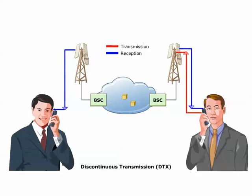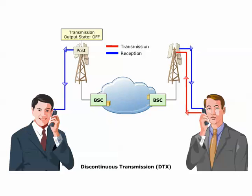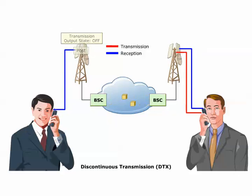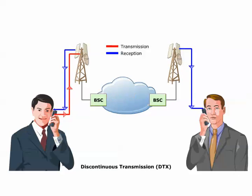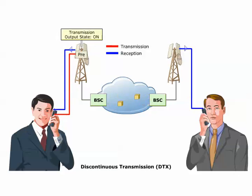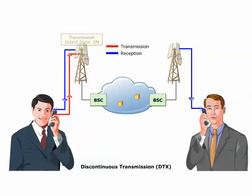When the MS detects that speech is absent during the conversation, it sends out a signal called POST to report a transmission output state OFF for the TCH. Conversely, when the MS detects that speech is present again, it sends out a signal called PRE to report the transmission output state ON for the TCH.